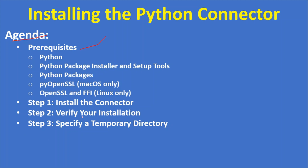To install the Python connector you should have already installed Python, Python package installers and setuptools. PyOpenSSL is only for macOS — if you are going to install the Python connector on macOS, then you have to configure PyOpenSSL and OpenSSL. libffi is only for Linux — if you are going to install the Python connector on Linux, you should configure OpenSSL.